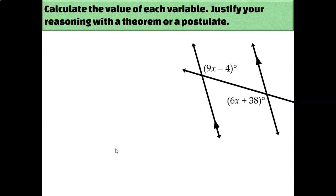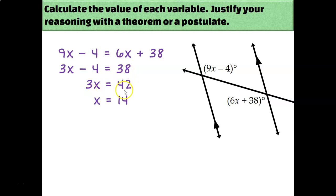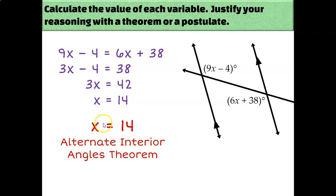I'd like you to pause the video and try this one on your own. These two angles are alternate interior angles because they are on opposite sides of the transversal and in between the two parallel lines. Since they're alternate interior angles, they must be congruent, so set the two expressions equal, subtract 6x, add 4, divide by 3, and get x equals 14. x equals 14 because of the alternate interior angles theorem.